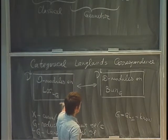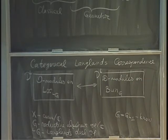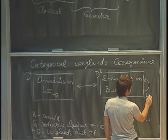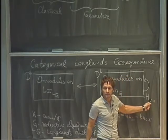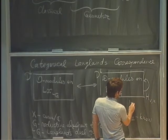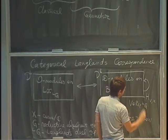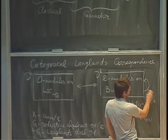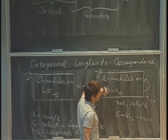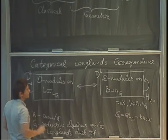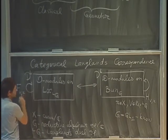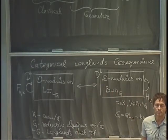This equivalence is supposed to be compatible with various operations, and one crucial property is compatibility with a certain set of functors. On one side, these are the Hecke functors H_{V,x}, parameterized by a finite-dimensional algebraic representation V of the dual group LG and a point x in X. There is a family of Hecke functors acting on the D-module category. On the other side, there is also a family of functors, which I call Frobenius functors — sometimes called Wilson functors — acting on the O-module category.